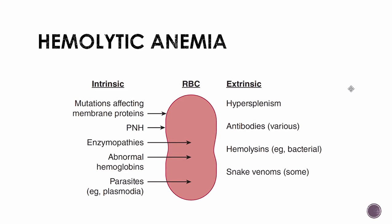Now let's talk about hemolytic anemia. There are many causes — some intrinsic (inside the RBC) and some extrinsic. Anything that alters the form of the RBC tends to be destroyed by the macrophages of the spleen. Most destruction of abnormal RBCs occurs in the spleen. In extrinsic cases, hypersplenism can cause the spleen to destroy even normal RBCs.